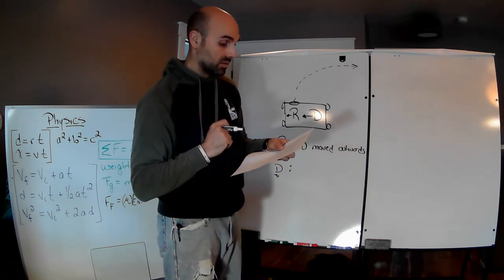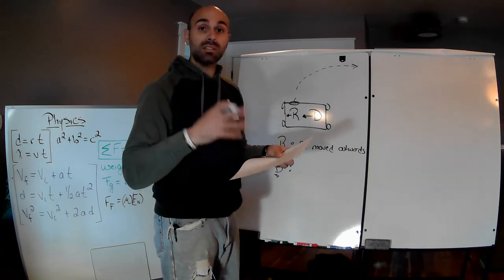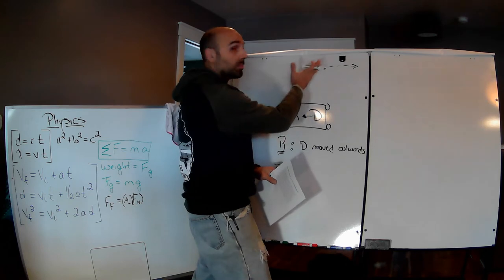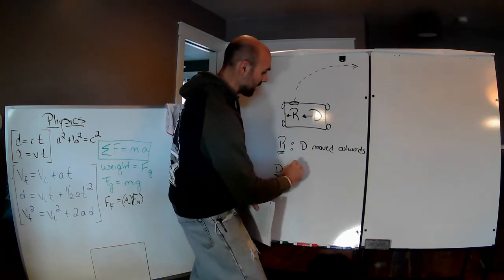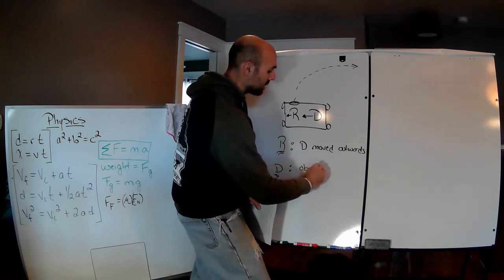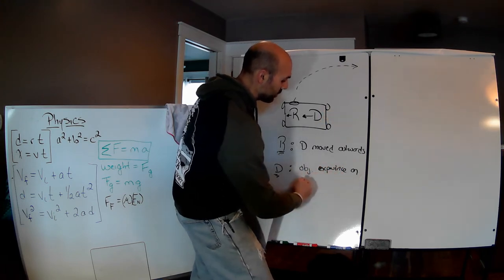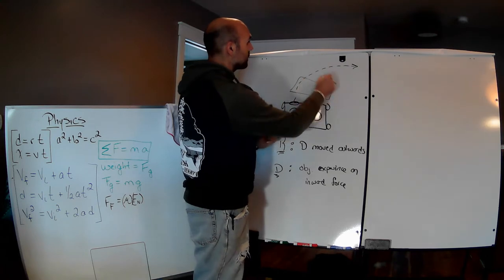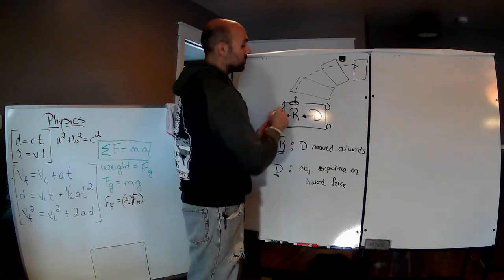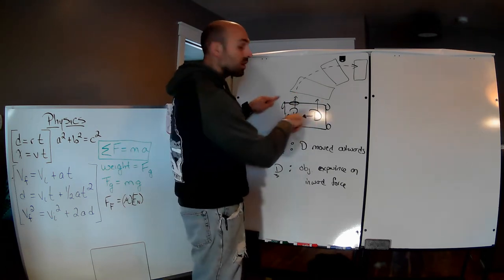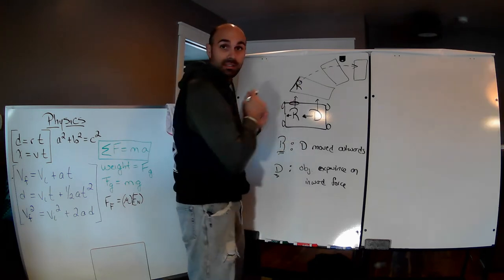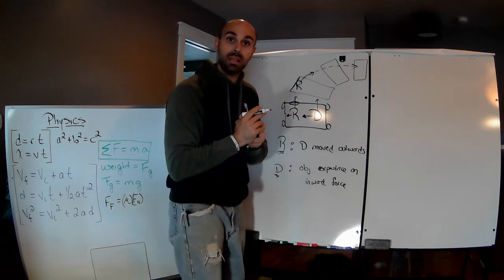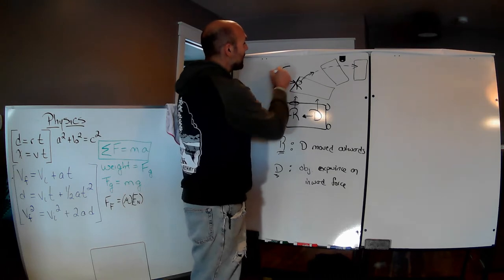Since Doris was a separate body, she continued to travel straight until the car, the door, and Rex caught up to her. So Doris said that objects experience an inward force. Think about it this way: as they start to make the turn, Rex continues straight on and Doris continues straight on. However, the car begins to turn until Rex is now against the door. He can't go any further, so he begins to curve with the car — because he is feeling that inward force pushing on him.